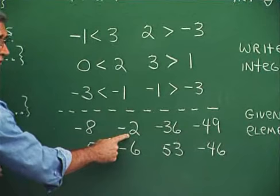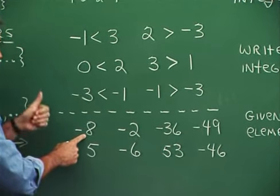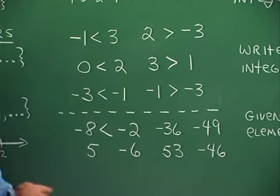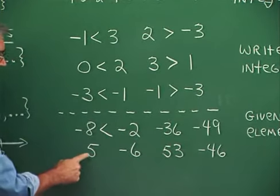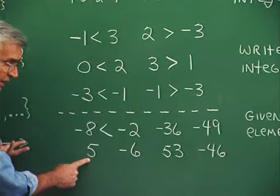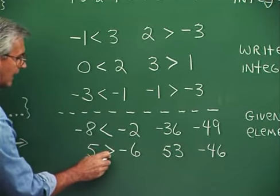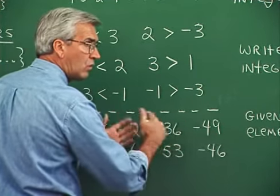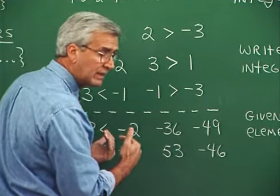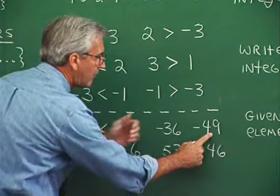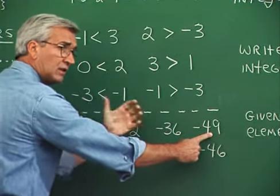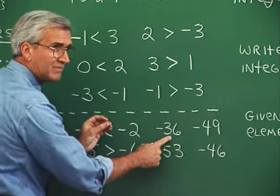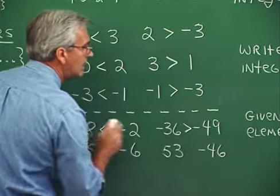What about negative eight and negative two? Negative eight lies to the left of negative two on the number line, so negative eight is less than negative two. Here we have a positive and a negative number — it's always true that a positive number is greater than a negative number, so five is greater than negative six. Now for two negative numbers: negative thirty-six and negative forty-nine — negative forty-nine lies further to the left, so negative forty-nine would be the smaller number. Thus negative thirty-six is greater than negative forty-nine.